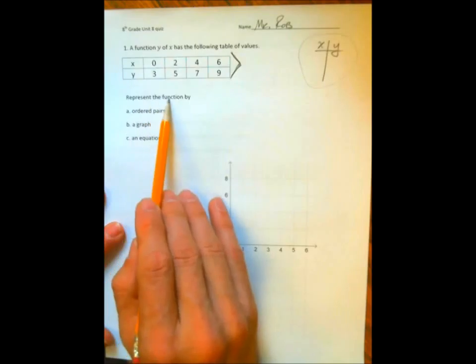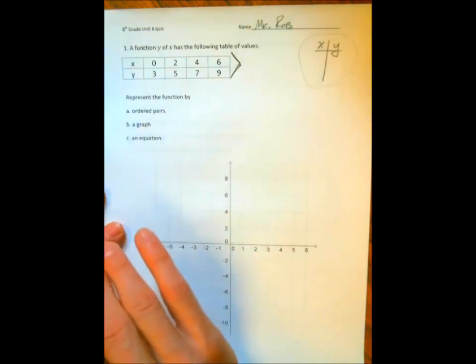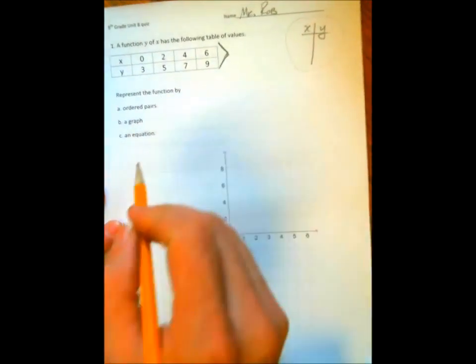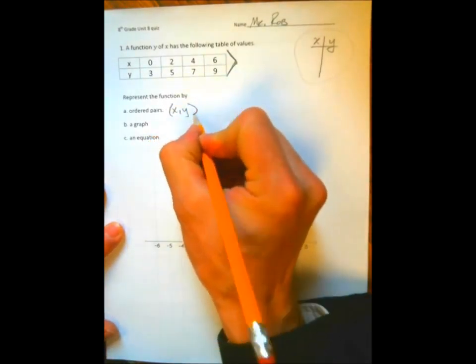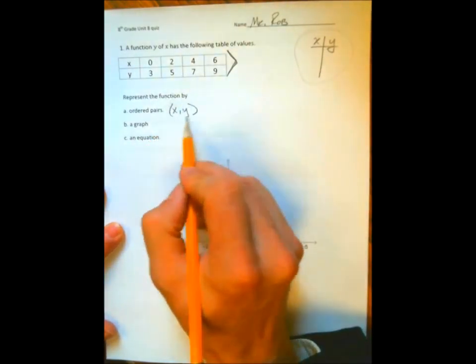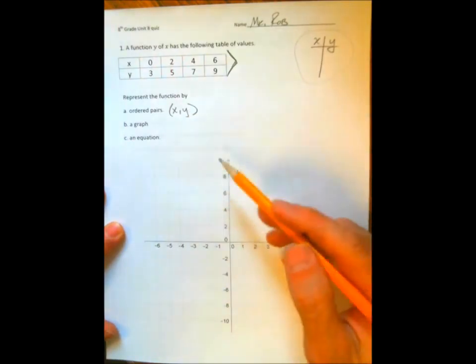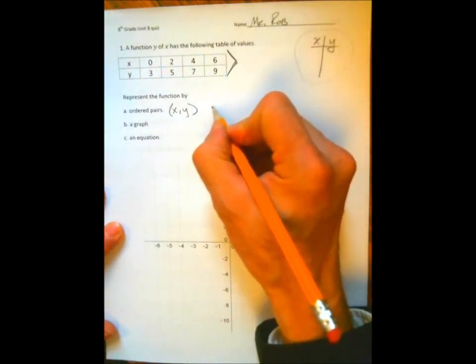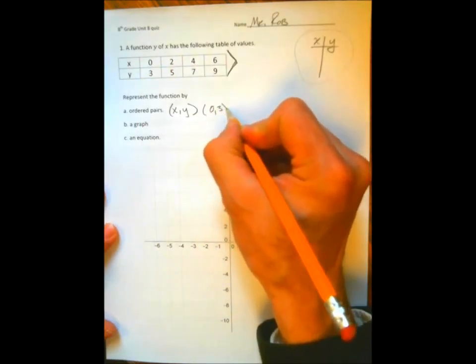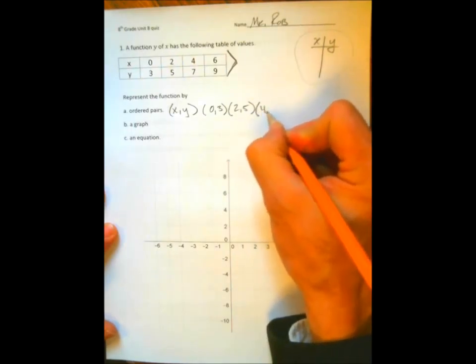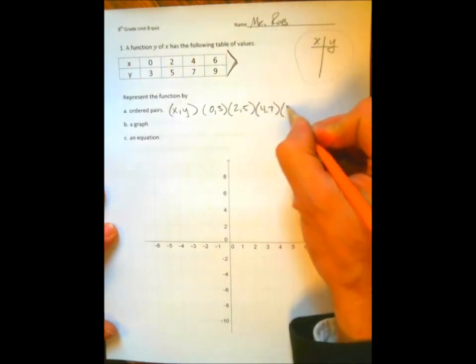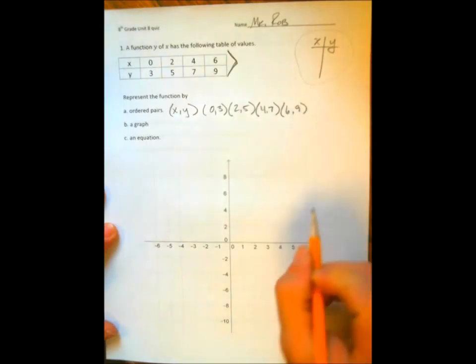It says here to re-represent the function by ordered pairs. That's very simple. An ordered pair is just an x, y set of numbers that refers to a graph, like this one right here. For example, this function is represented by the ordered pairs (0,3), (2,5), (4,7), and (6,9). That's it.